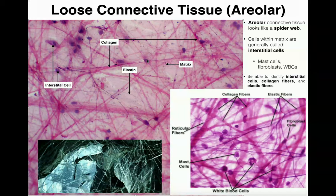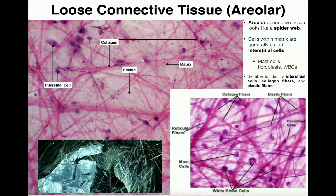We also want to identify the protein fibers in areolar tissue, and there are two major types: collagenous fibers, or collagen, and elastic fibers, or elastin. Collagen fibers are the thicker fibers — you can see them as thick pinkish strands running through the tissue. In contrast, elastic fibers are much thinner and appear dark purple. They're very thin and skinny compared to the collagen fibers.